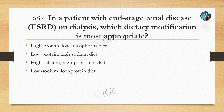Next question: in a patient with end-stage renal disease on dialysis, which dietary modification is most appropriate? Option A: high protein, low phosphorus diet. Option B: low protein, high sodium diet. Option C: high calcium, high potassium diet. Option D: low sodium, low protein diet.